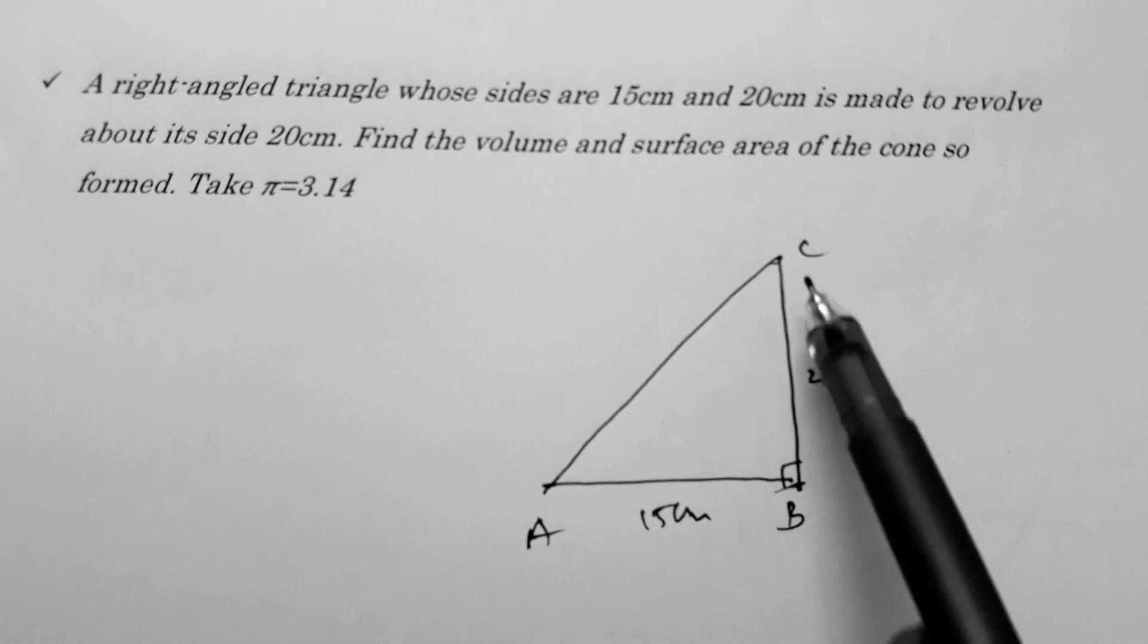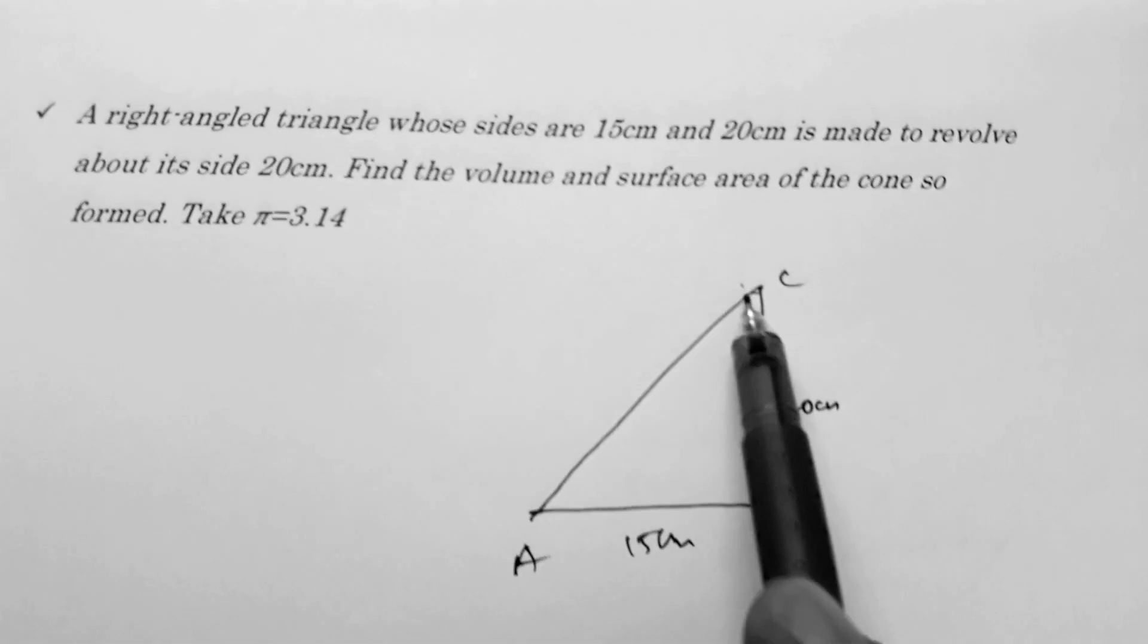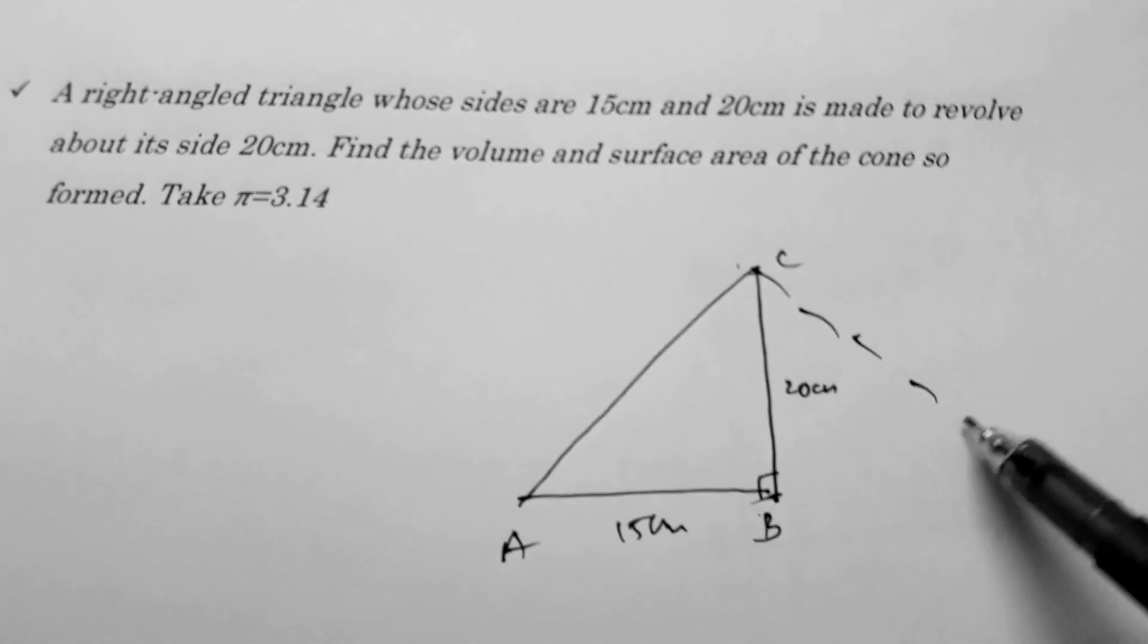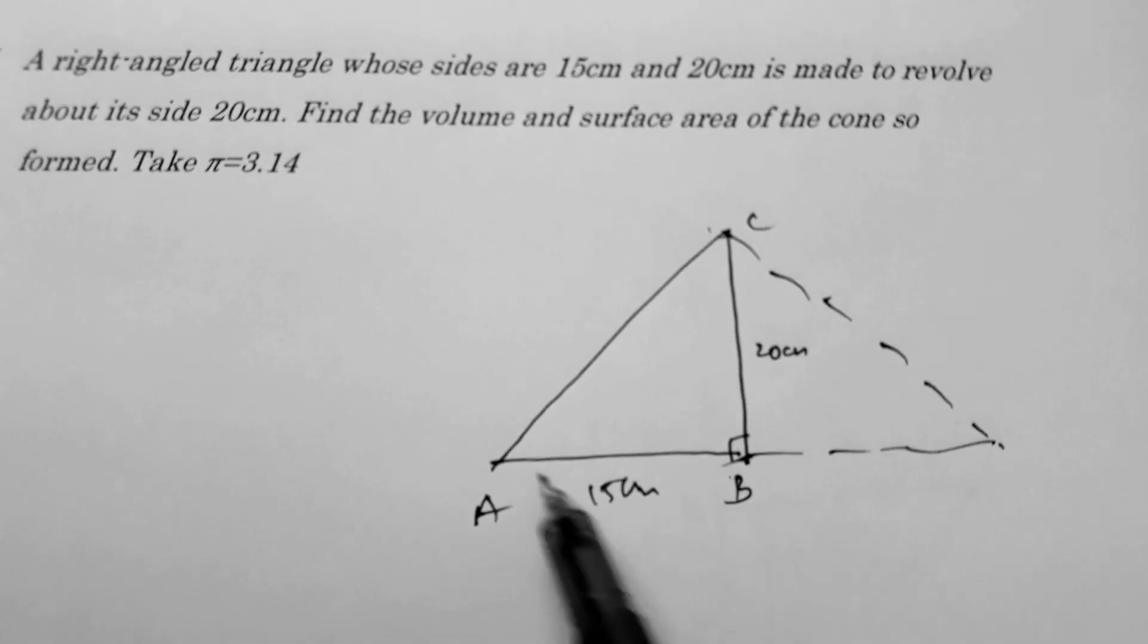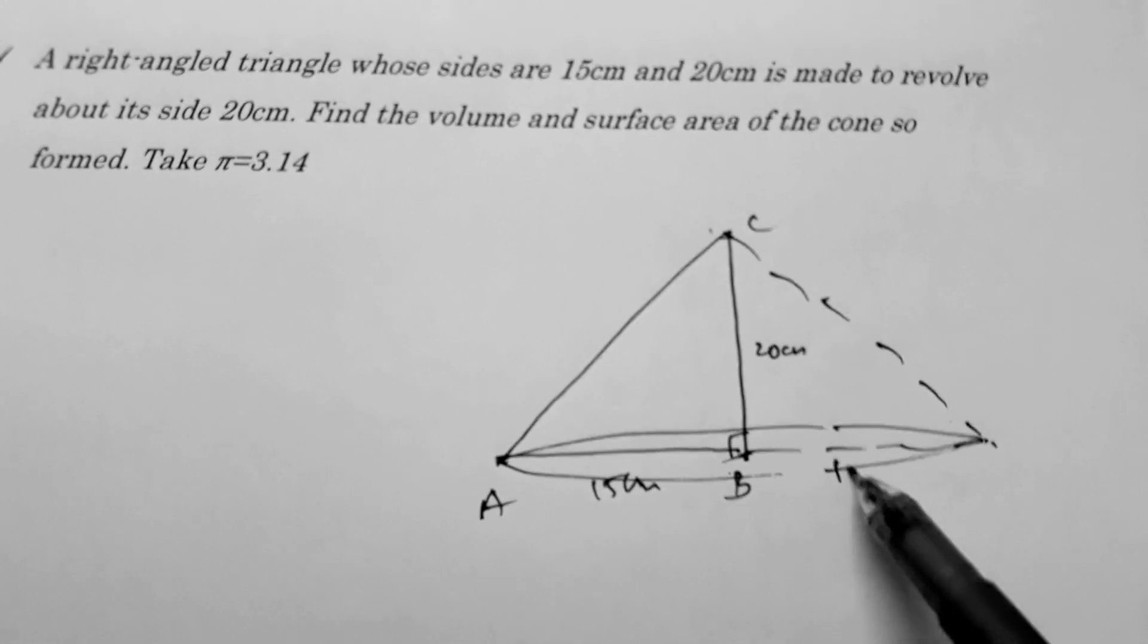We'll revolve it along the side about its side 20 centimeters. A cone will form this way because we will hold CB and revolve it, so we will get a cone in this form. The radius of the cone will be 15 centimeters.